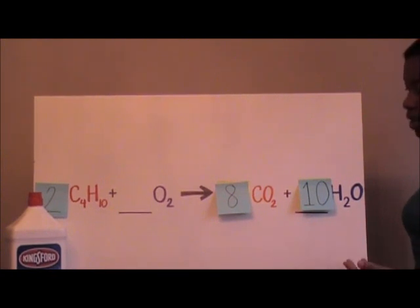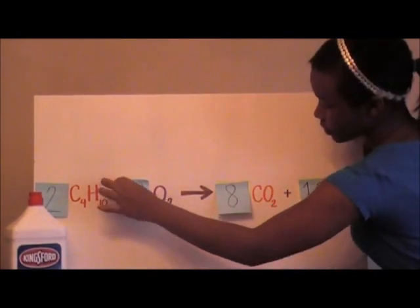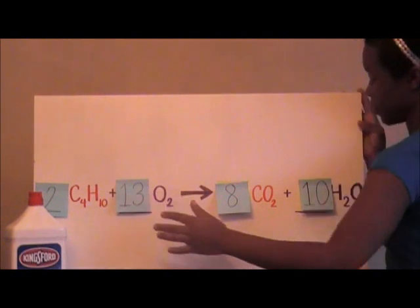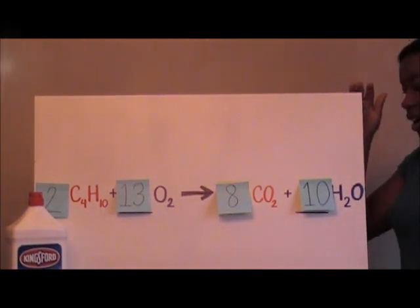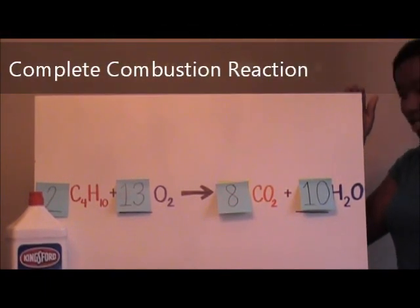After doubling, there are 26 oxygen atoms on the right side. This means 13 molecules of oxygen gas are reacted. And there it is. A perfectly balanced equation of a complete combustion reaction.